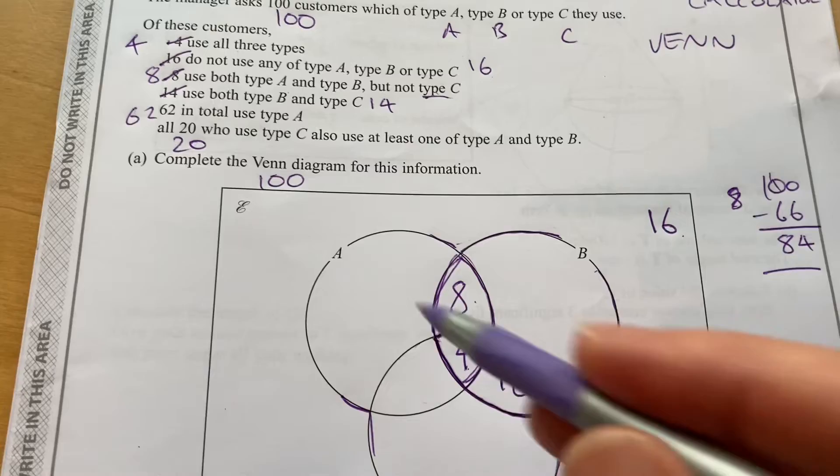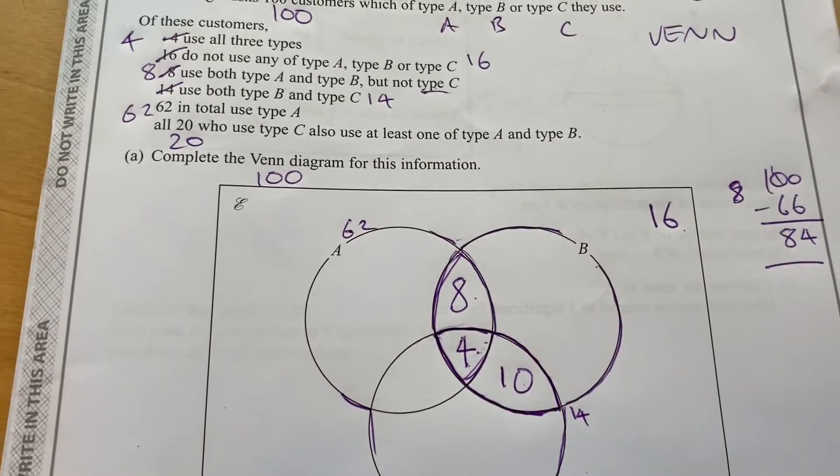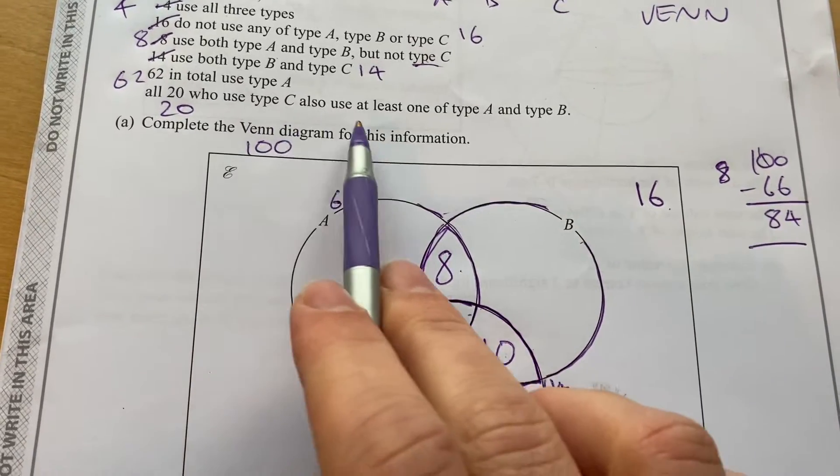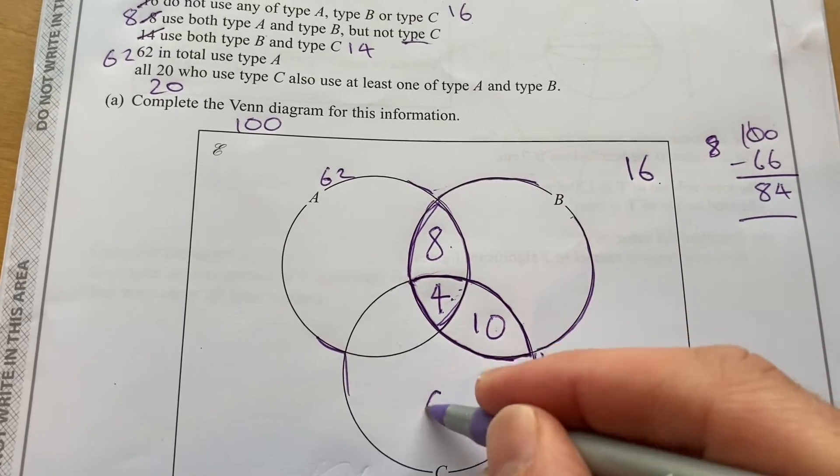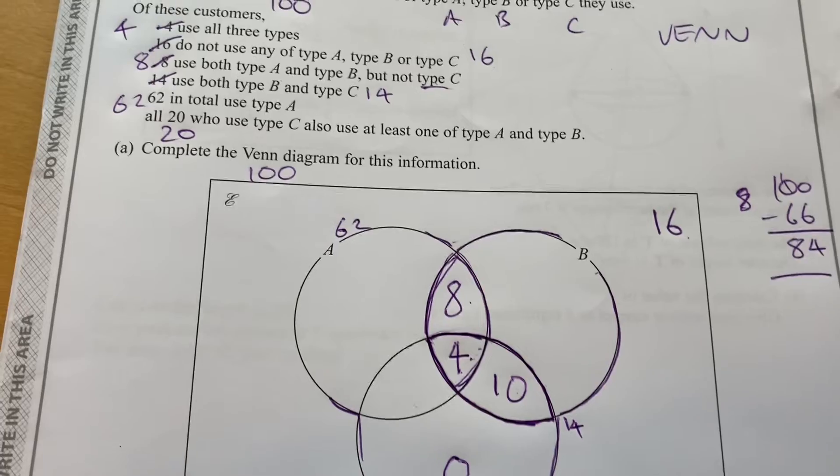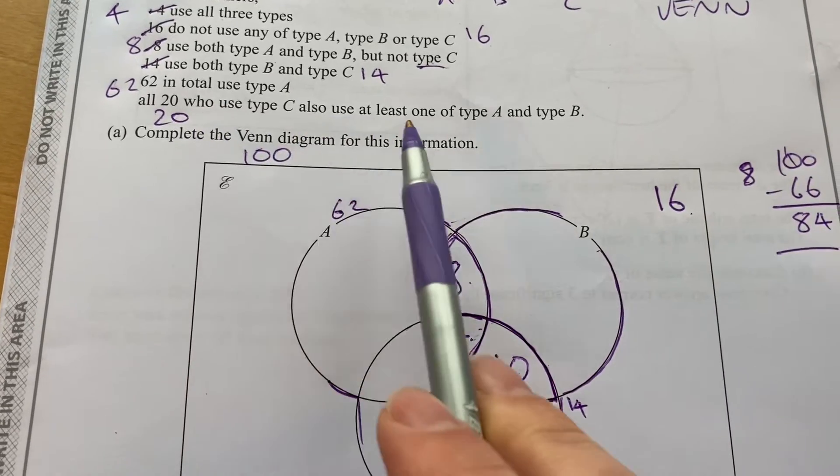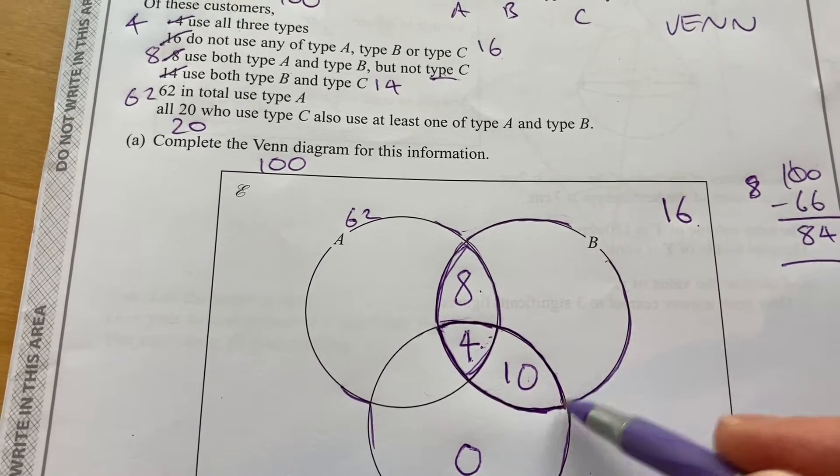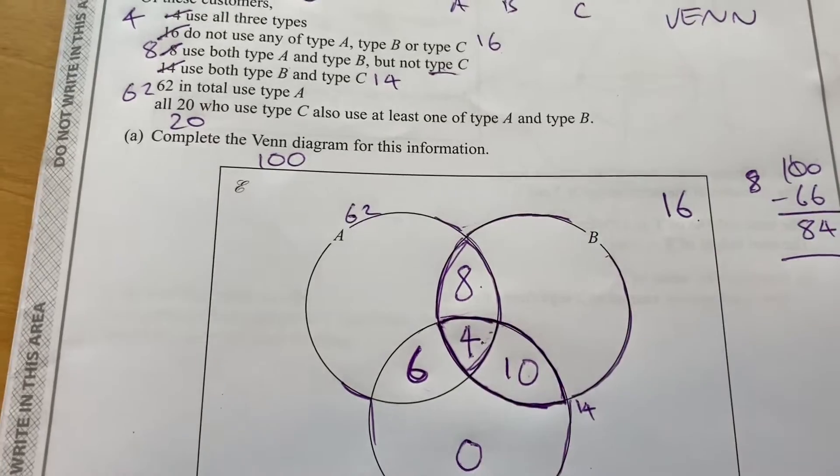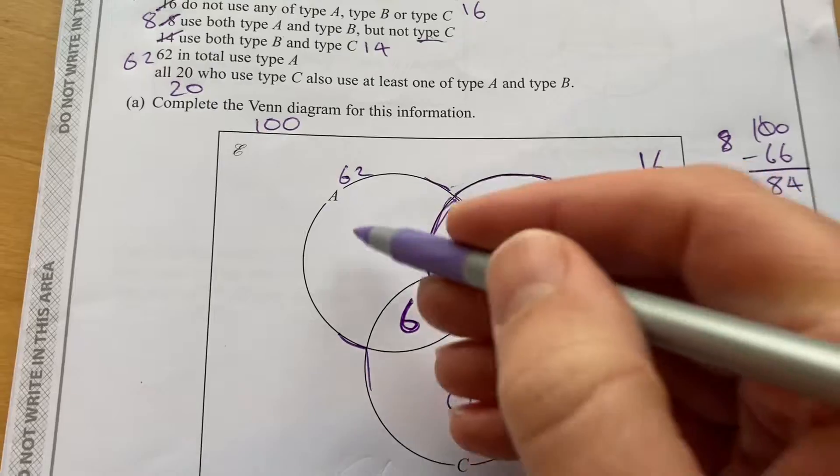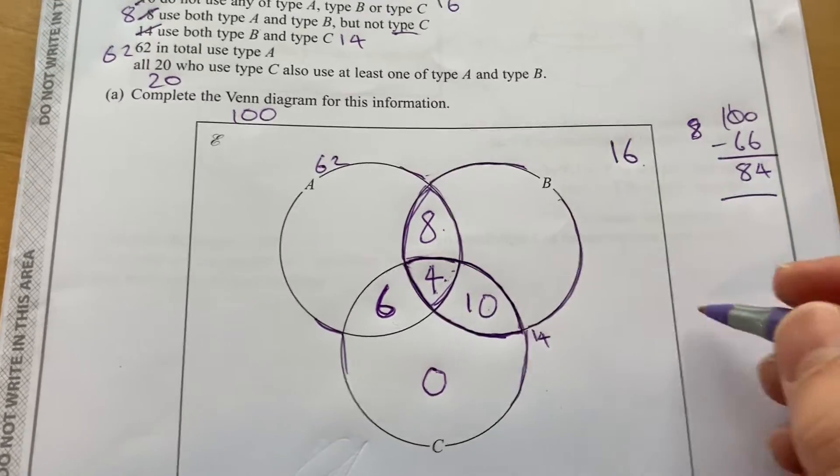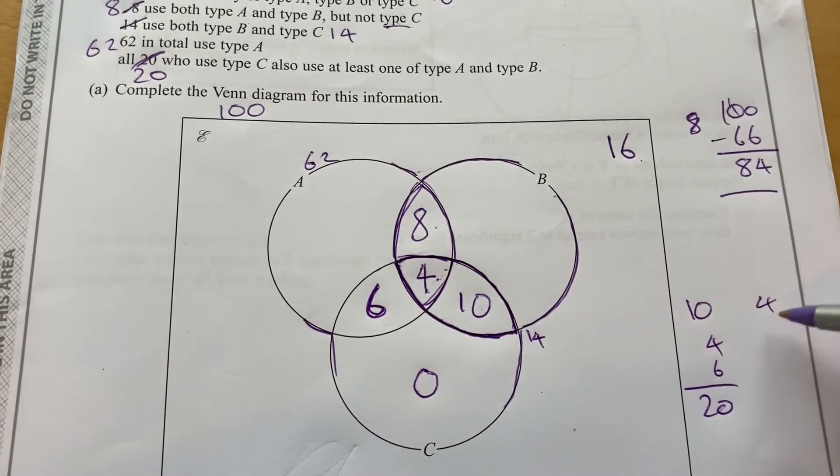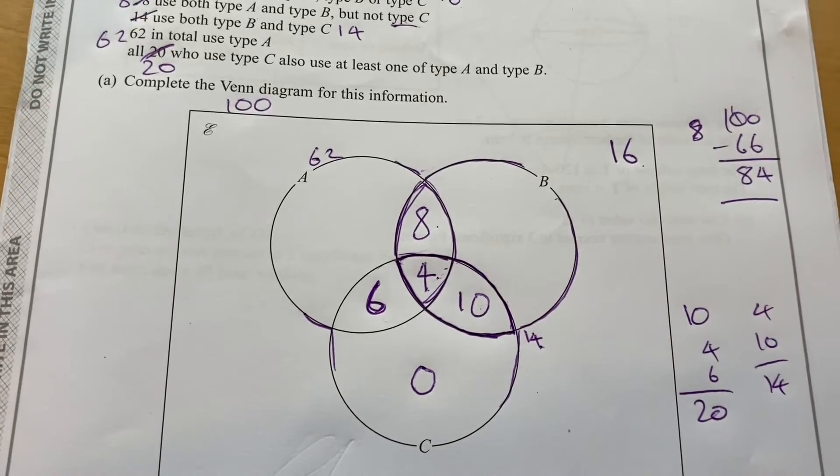Now it says 62 in total use type A. And then all 20 who use type C also use at least one of type B and C. So this section here that's C on its own is going to be a zero. We know 14 are already using B, meaning that six more need to be using A as well. Because 10 plus 4 plus 6, that's the 20 they've talked about.